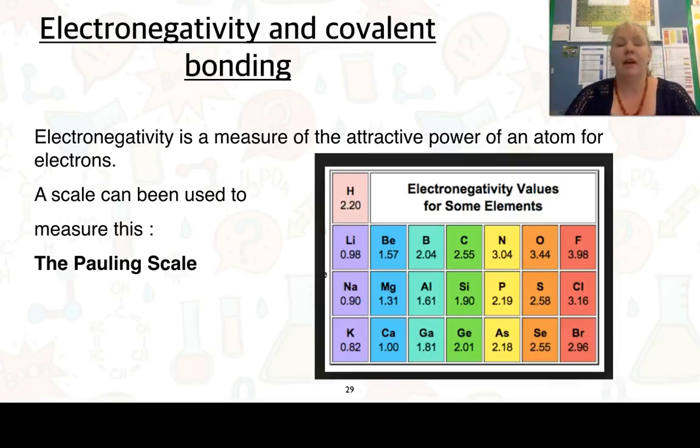Here we're looking at electronegativity. We talked about electronegativity in one of our previous videos. As a reminder, it's a measure of the attractive power of an atom for electrons. A scale can be used to measure this and it's called the Pauling scale. Some of the values are given in the table on the right hand side. We have hydrogen at 2.2 versus something like oxygen at 3.44. What that says is that oxygen has a greater electronegativity for the electrons in comparison to hydrogen.